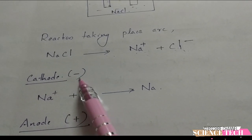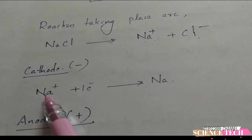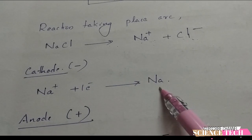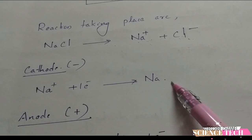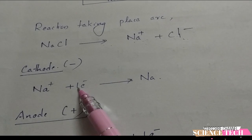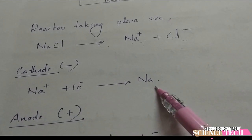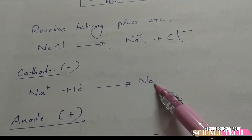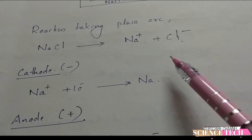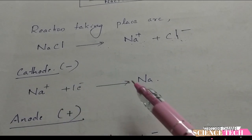At the cathode, the electron-rich electrode, the sodium ion Na+ gains one electron: Na+ + e- → Na. This gives a neutral sodium atom, which is deposited at the cathode.